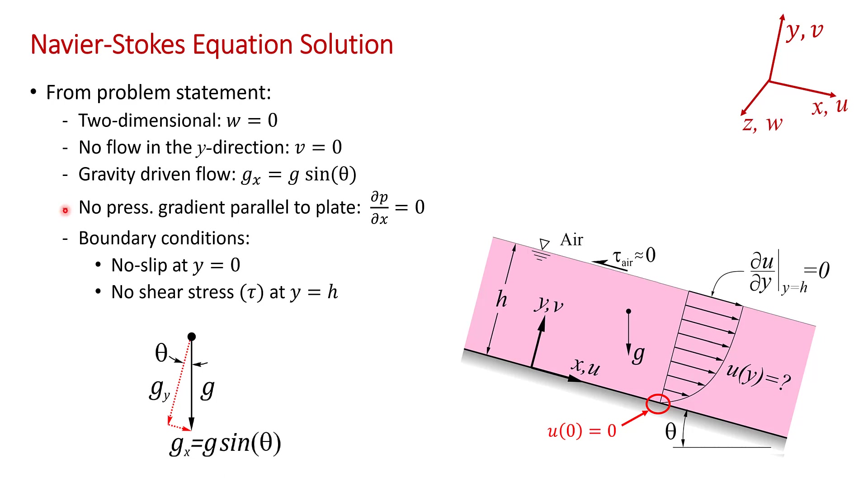You're also told in the problem statement that there's no pressure gradient in the x direction, so no pressure gradient parallel to the plate. ∂p/∂x = 0. I'll talk more about that later.